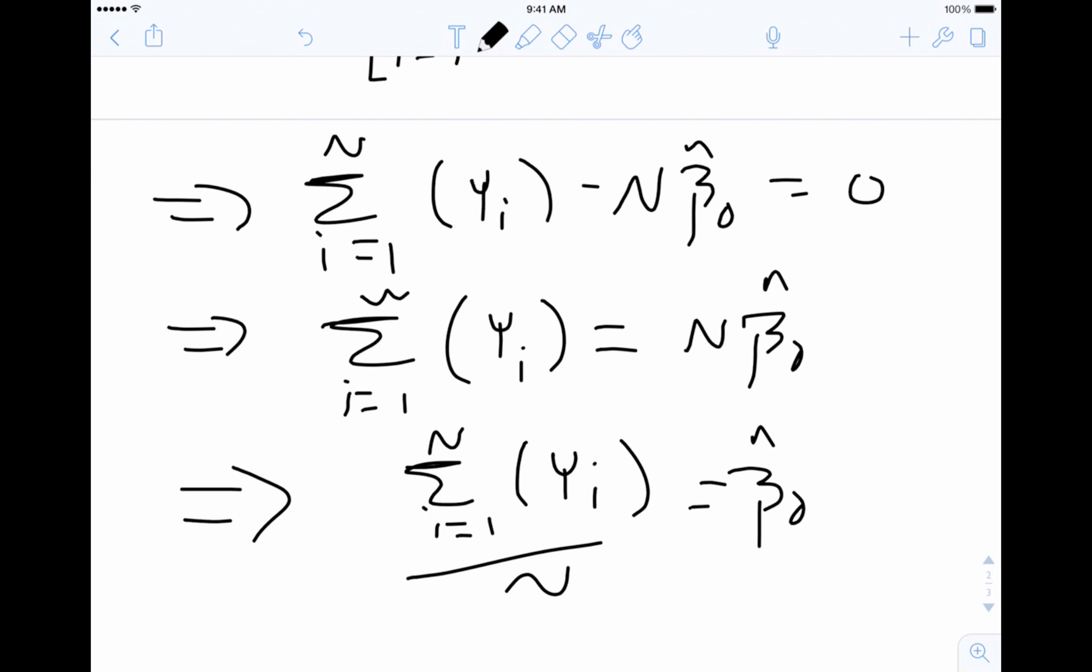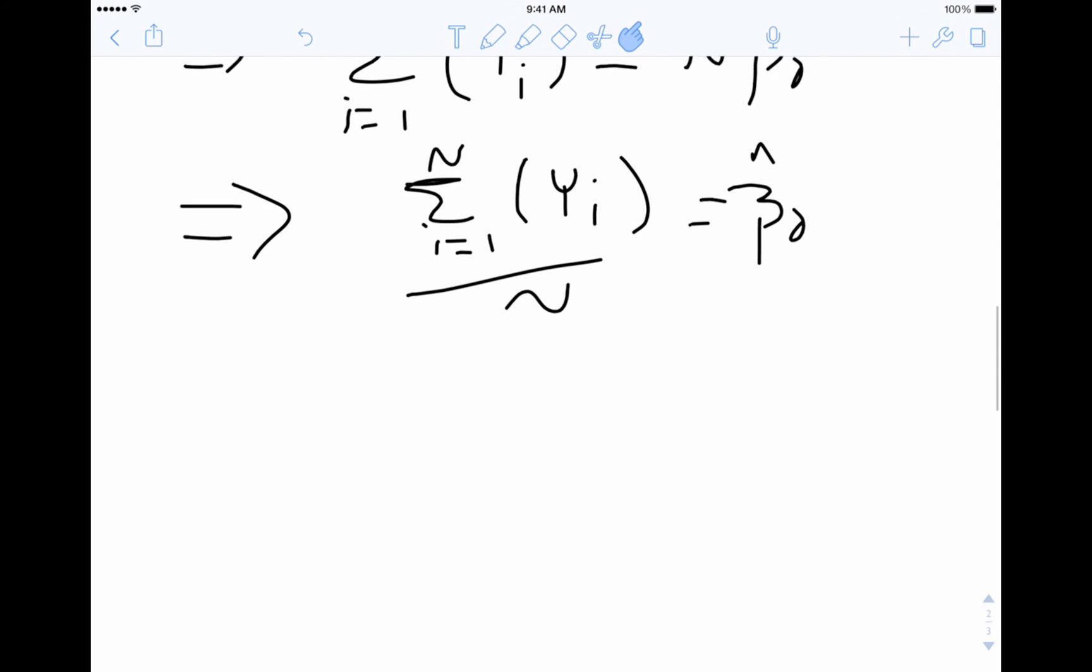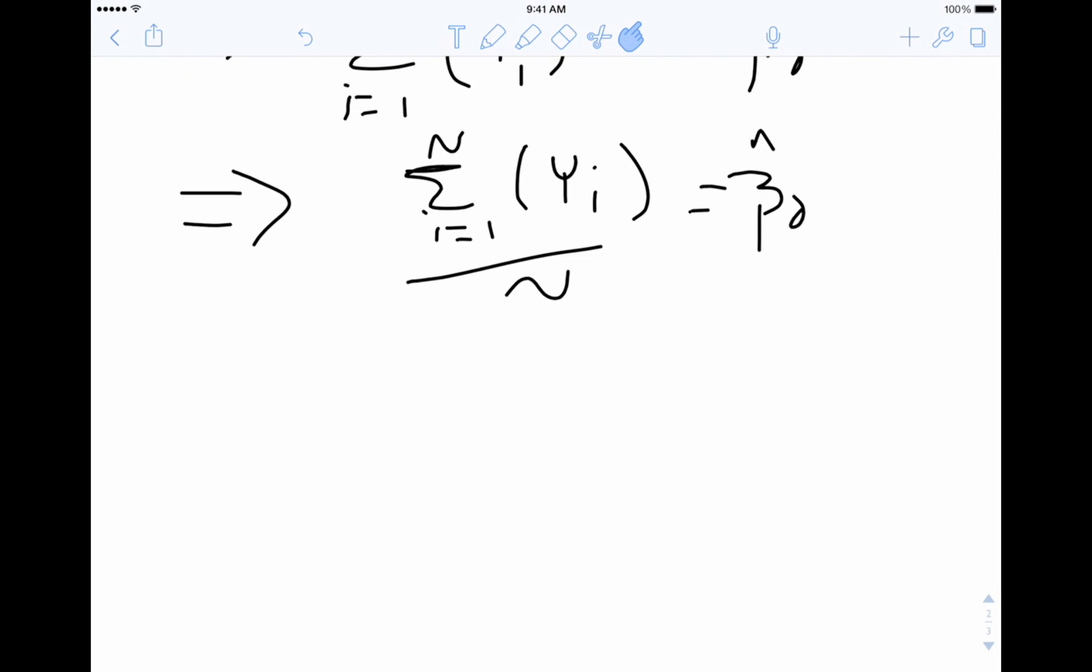So unfortunately I can't think of a way to get here without doing math, but there's the answer. So the first part of the answer is beta naught hat is the value that best summarizes all of the data points. And since we're using least squares to find our estimate, beta naught hat is equal to the mean.